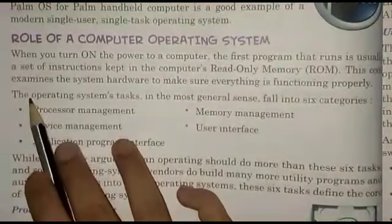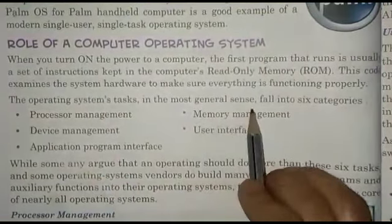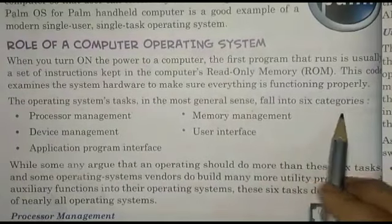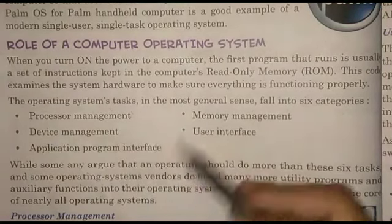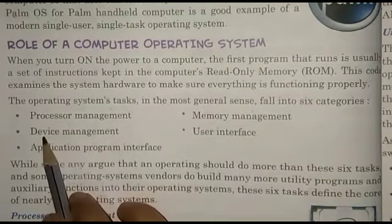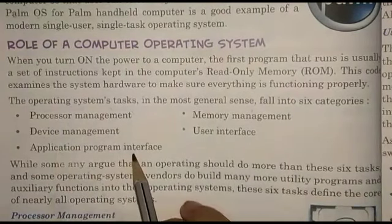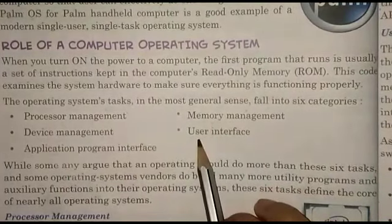The operating system tasks, in the most general sense, fall into six categories: number one, processor management; number two, device management; number three, application program interface; number four, memory management; and lastly, user interface.